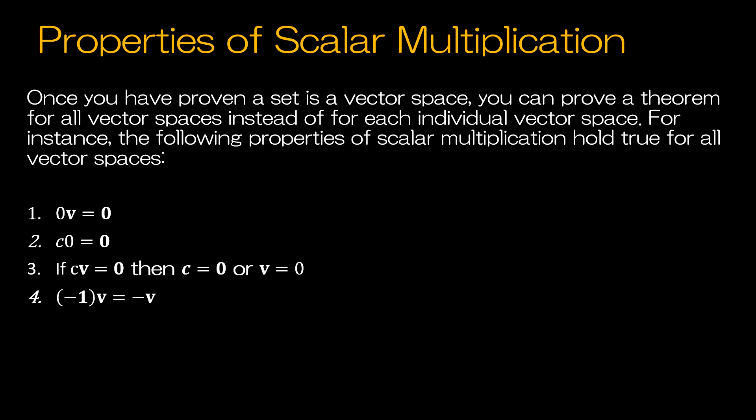Now you might ask: why do we care about vector spaces? One answer is that you can prove a theorem once for all vector spaces rather than for each individual one. Instead of showing that properties of scalar multiplication are true separately for polynomials, R², R³, Rn, and various spaces of continuous functions, you prove it once and it holds for all vector spaces.